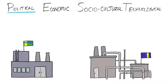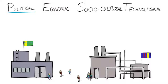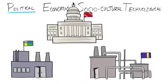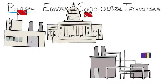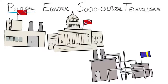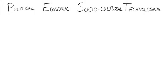In some business environments, property rights are poorly protected by governments. Those with political power can seize property with few repercussions, and governments may be unlikely to enforce patents, trademarks, and so forth. Times of civil unrest and political instability may make the business environment particularly uncertain and risky.